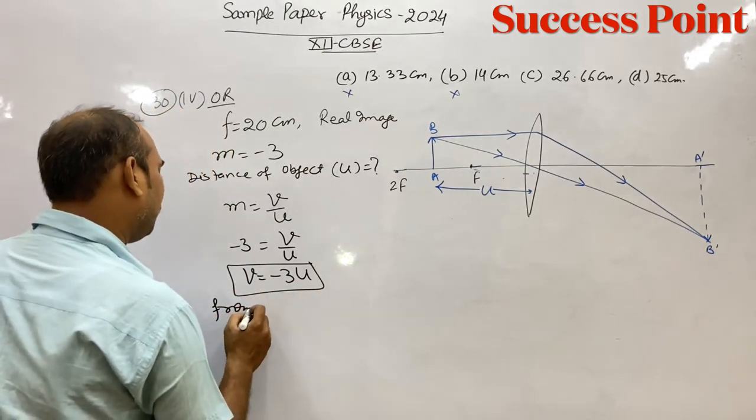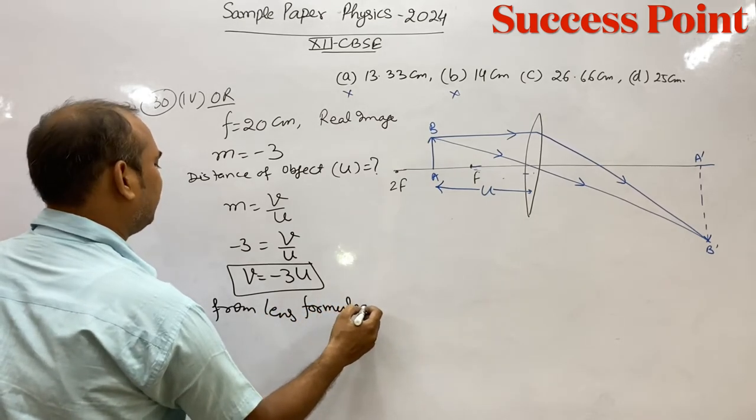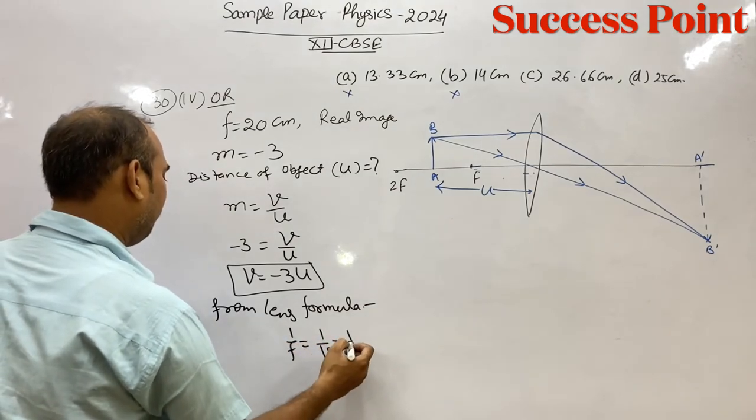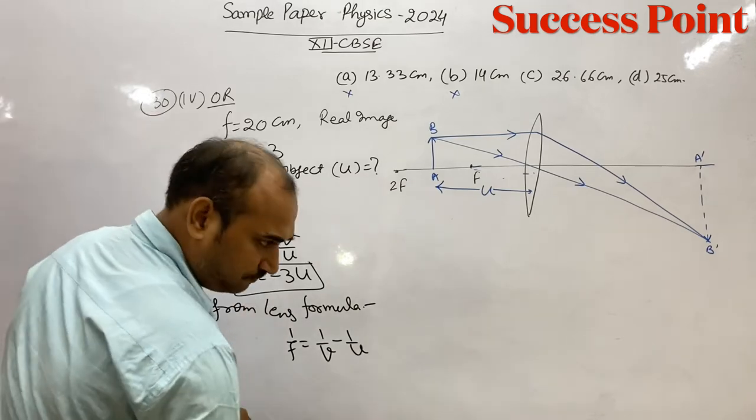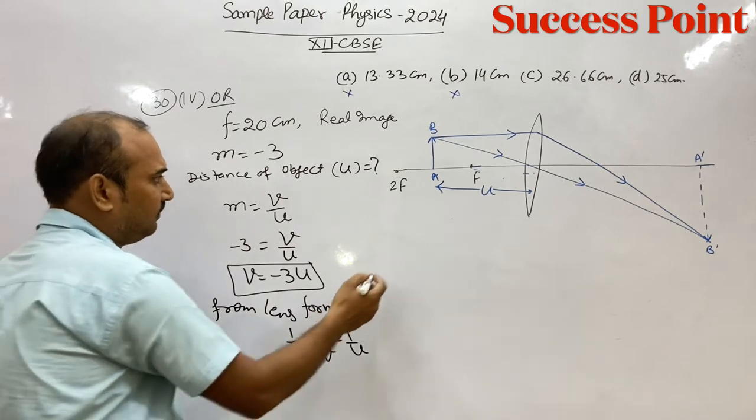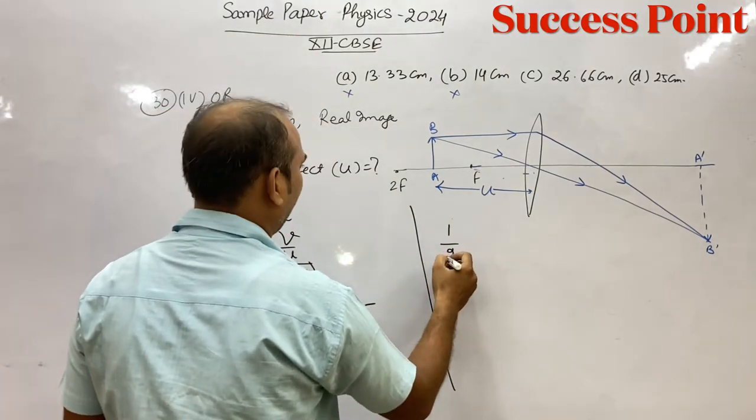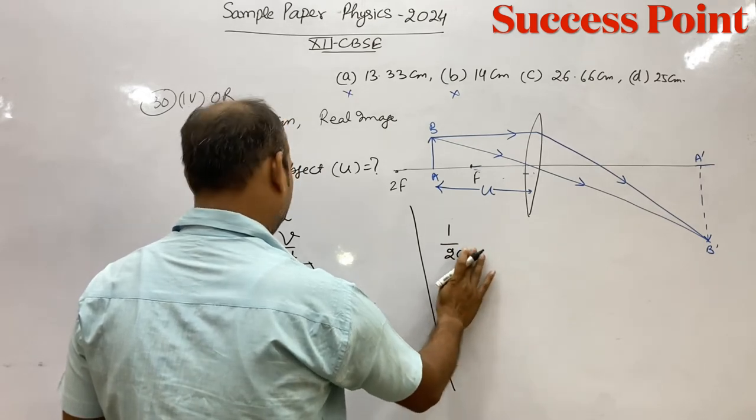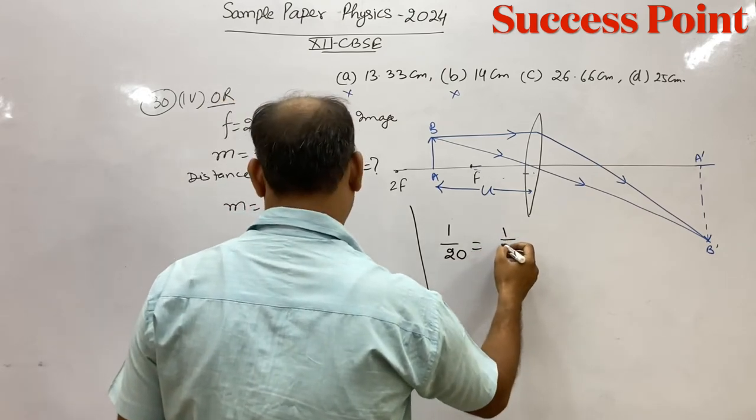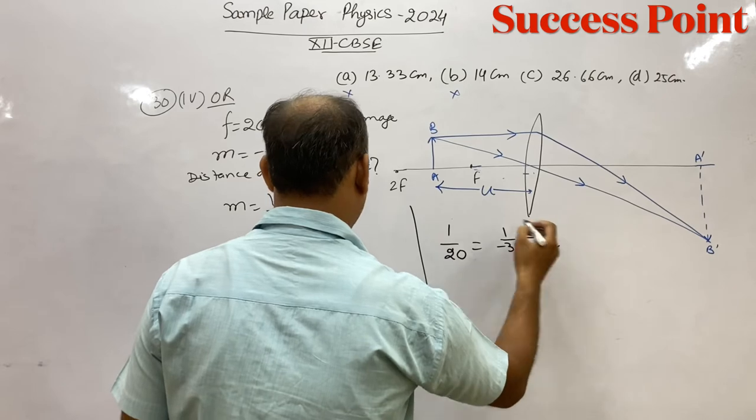From lens formula, if I apply lens formula, one upon F equals what? One upon V minus one upon U. Let's solve this. What is the value of F here? 20 cm. Equals 1 upon V, V is minus 3 U, minus 1 upon U.